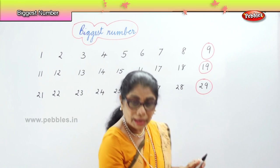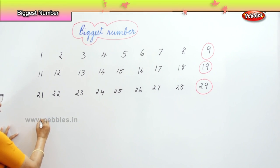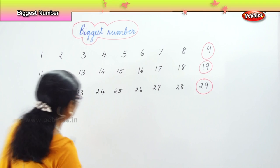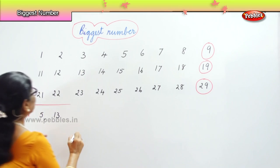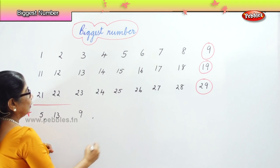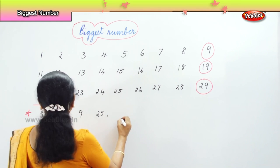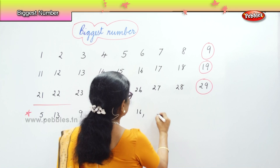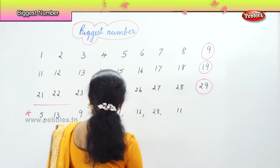Now I'll give you a mix-up and you tell me the biggest number. I'm going to put down here: five, thirteen, nine, twenty-five, seven, sixteen, twenty-eight, and eleven. Look at the numbers I have here — I have nine numbers.